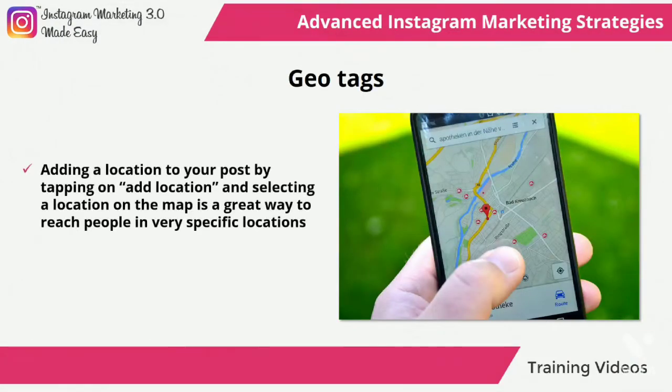Geotags. Adding a location to your post by tapping on add location and selecting a location on the map is a great way to reach people in very specific locations. Geotags will be shown on your post images and they will be shown to people in that location and to people near that location as Instagram recommendations, if those users use the search feature to find content. Apply these microblogging strategies in your daily Instagram posts and see how your performance as well as your reach increases in record time.